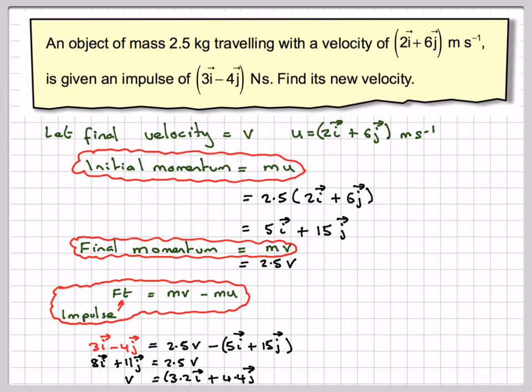And therefore dividing through by 2.5, we're going to get the final velocity is 3.2i plus 4.4j meters per second.